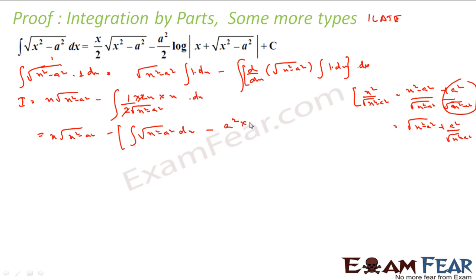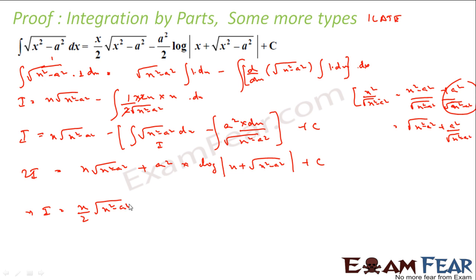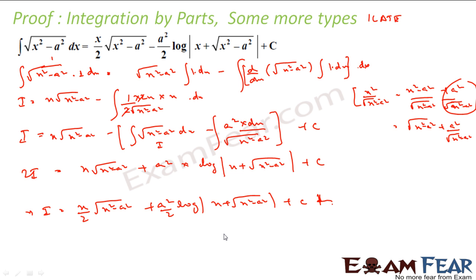The integral ∫dx/√(x²−a²) is a known result: log(x + √(x²−a²)) + C. So 2I = x·√(x²−a²) − a²·log(x + √(x²−a²)), which gives I = (x/2)√(x²−a²) − (a²/2)·log(x + √(x²−a²)) + C. Thus I have proved this formula.